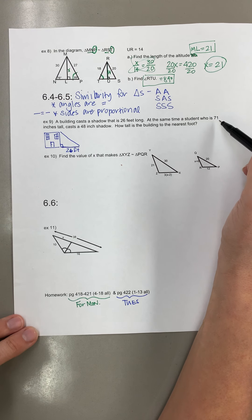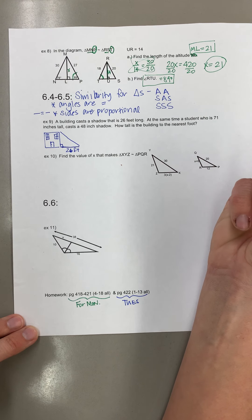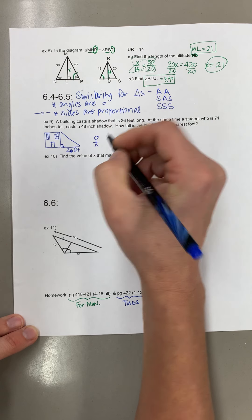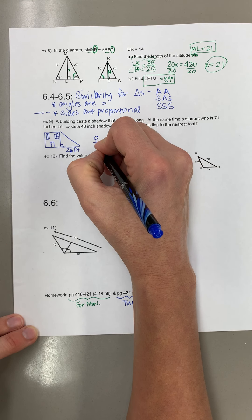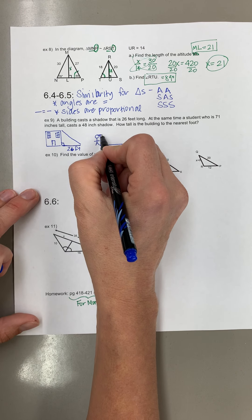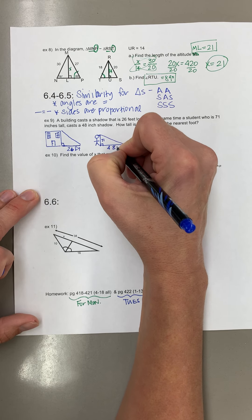So clearly that's the building and here's our shadow down over here. At the same time a student who's 71 inches tall casts a 48 inch shadow. So student's standing nearby. They're 71 inches tall. Sorry this is a very bad drawing.